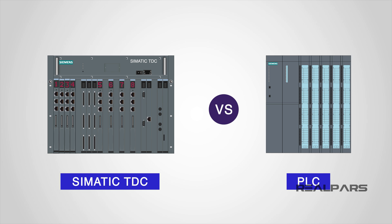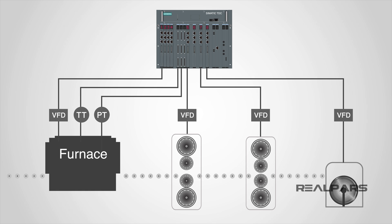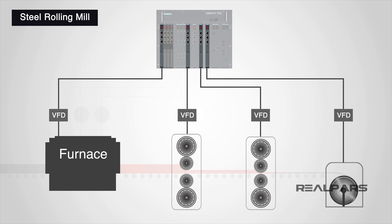This should help you understand why the demands put on the SIMATIC TDC are far greater than a standard control system, why this specialized hardware is used, and what it is truly capable of. SIMATIC TDC is commonly used in large plant engineering environments, for example in a steel rolling mill. The complex nature of a rolling mill and the many stages the steel passes through to become the end product makes the SIMATIC TDC extremely useful, because each part of the process would have its own PLC controller in the SIMATIC TDC rack.